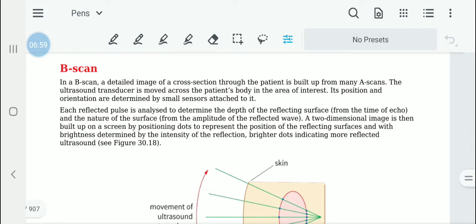B scan uses many A scans put together to see a kind of cross section or the area of the body as a two-dimensional image.